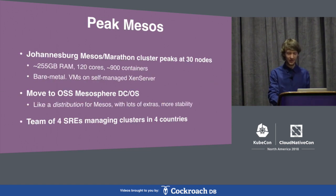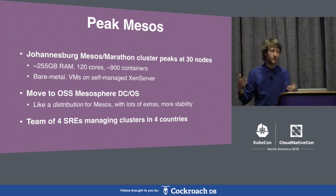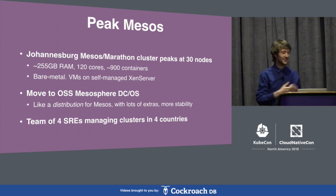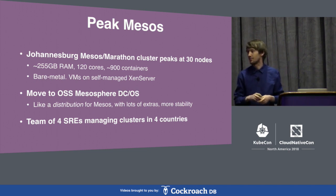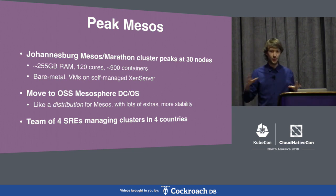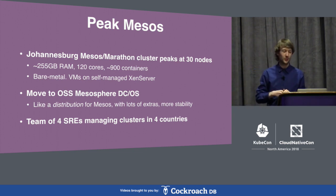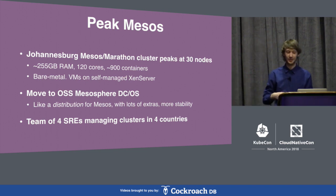Moving on to 2017, we hit a peak in our clusters. In Johannesburg, our cluster was the biggest — about 30 worker nodes, peaking at about 900 containers — all on a bare metal system, with no proper cloud in Africa. We also moved to the open source version of Mesosphere DCOS, which brought some more stability. At this point, we had a team of four SREs managing clusters in four different countries. We were kind of at the edge of having too much to manage and were probably stretched a bit thin in some areas.